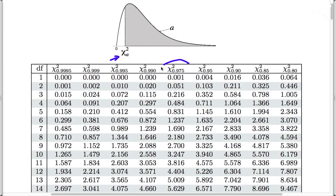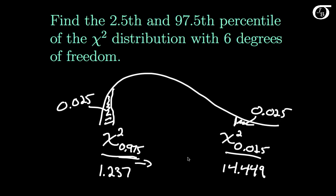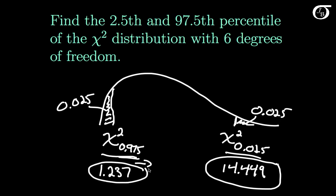The other value we needed was chi-square 0.975. With 6 degrees of freedom, the appropriate value is 1.237. So our chi-square table tells us that the value in the left tail is 1.237, and the value in the right tail is 14.449. In other words, 1.237 is the 2.5th percentile and 14.449 is the 97.5th percentile — values we'll use in places like calculating a confidence interval for a variance.